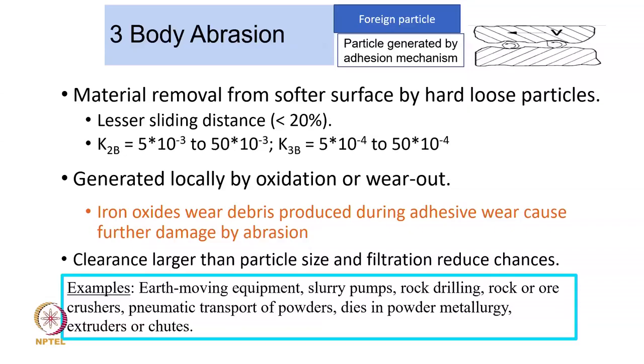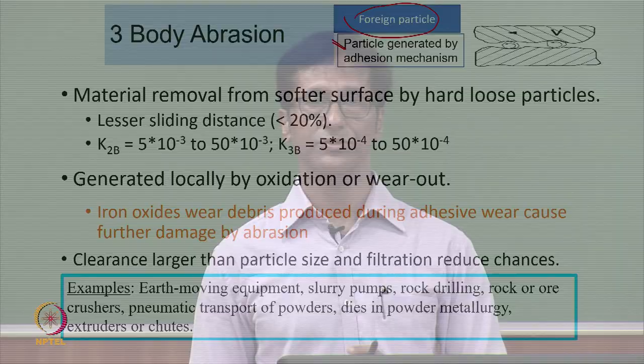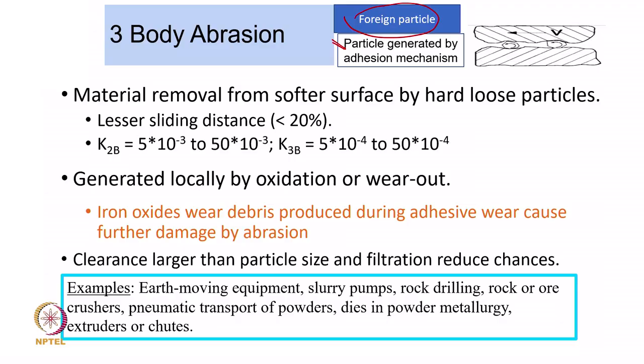Now we will move to three-body abrasion from two-body abrasion. In two-body abrasion we developed an equation quite similar to what we developed for adhesive wear. For three-body abrasion, the third body is a foreign particle or a particle generated during the wear mechanism — it can be from adhesive or abrasive mechanism. The three bodies are: surface 1 (first body), surface 2 (second body), and the particle acting as the third body — hence the name three-body abrasion.